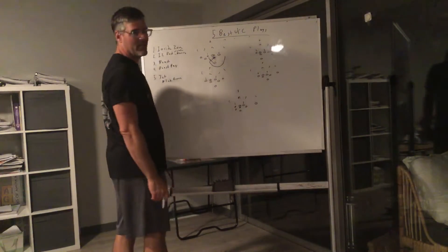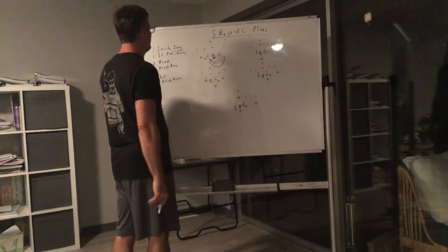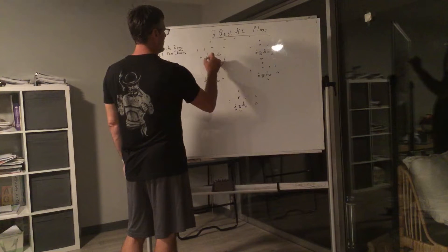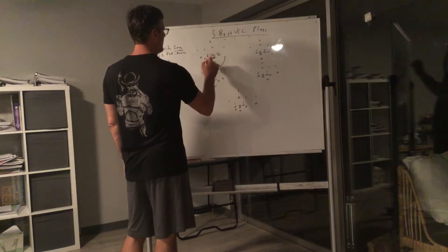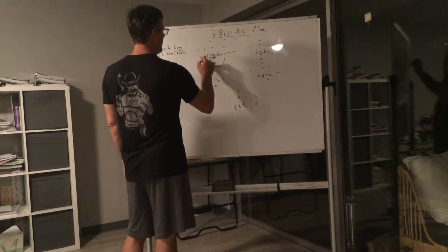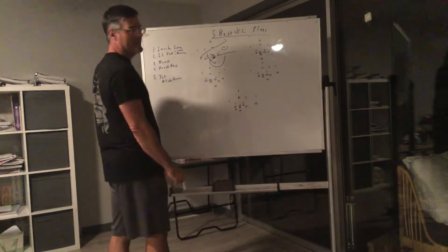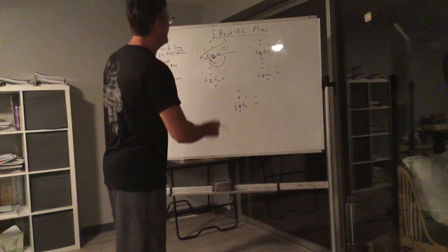I call this under inside zone. This would be inside zone left, boot right. This is the under version. We're going to do the exact same thing, nothing different. He's going to run underneath in the flat, and our X is going to run a little drag. So we're going to high-low read there. Easy, this is easy. This is for the younger guys. Easy throws.